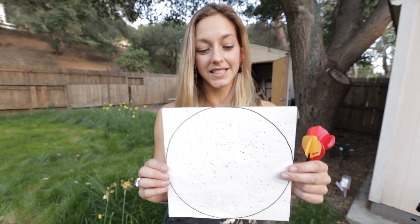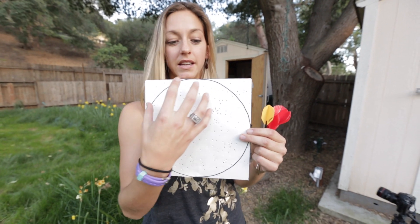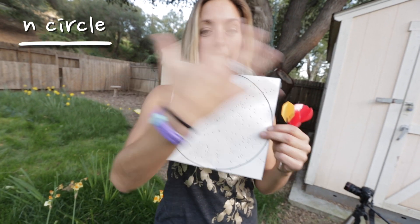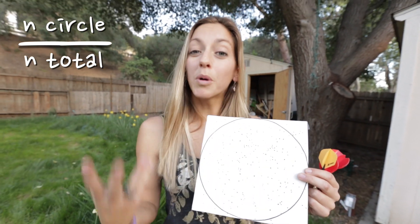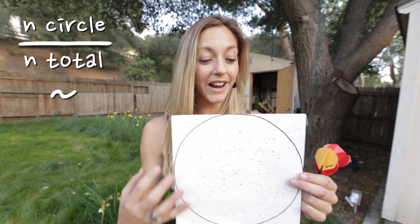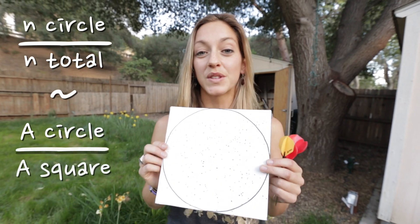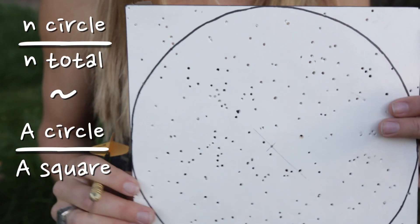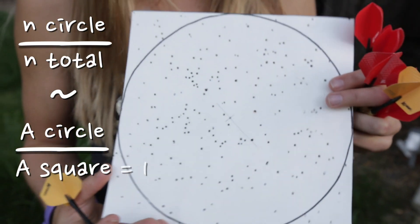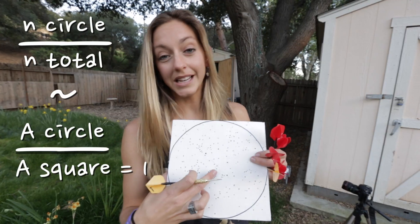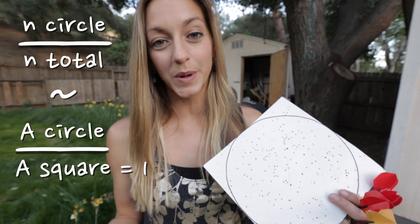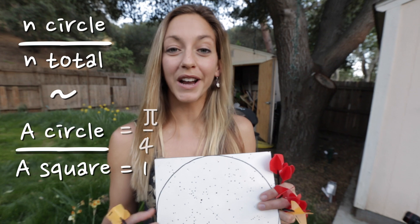The idea of calculating pi like this is that the number of darts that land in the circle divided by the number of darts that land in the entire square should be proportional to the area of the circle divided by the area of the square. If the length of one side of the square is one, the area of the square is one, meaning the radius of the circle is one half. So the area of the circle is pi r squared, which is pi over four.